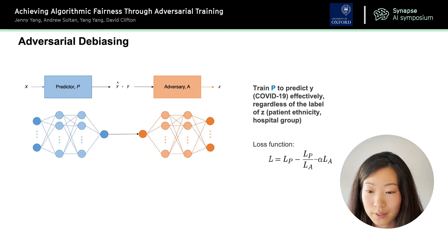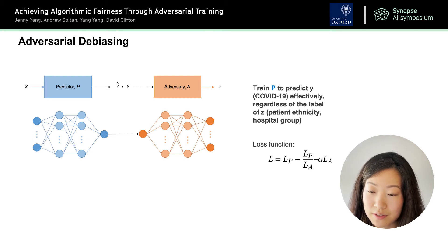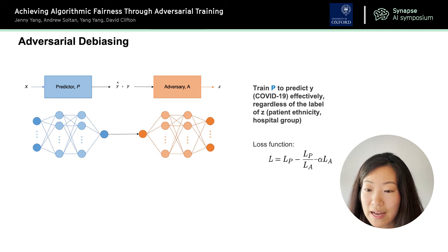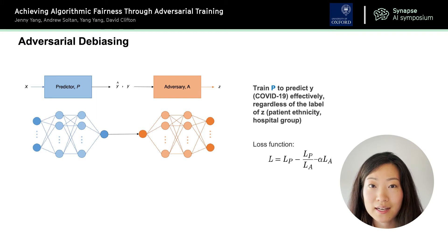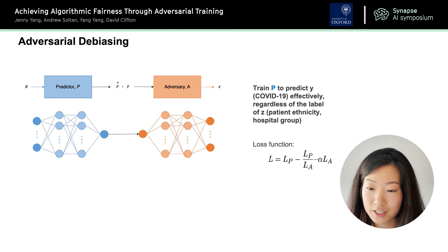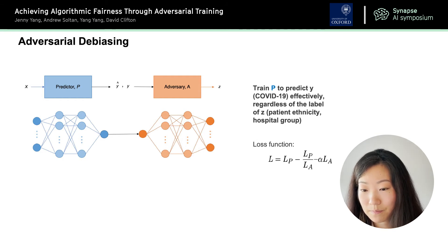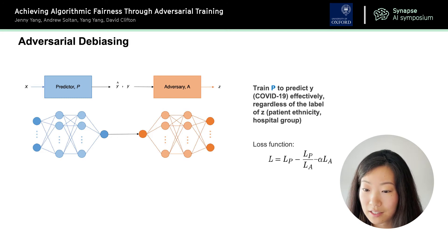To do this, we use the following loss function. LP is the loss of the predictor network, and LA is the loss of the adversary network. Alpha represents the degree of debiasing that we want to perform. The middle term ensures that when we start training, the loss function will propagate in the correct direction. Our goal is to have a small loss for P and a large loss for A, and you can see they're being pitted against each other with the negative sign in front of the loss of A.